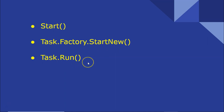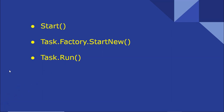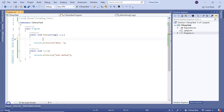Task, Task.Factory.StartNew(), and Task.Run() all use threads from the thread pool. That was how you can start a task in different ways in C#. Now we would like to know what is the difference between these three ways of starting a new task and when to use which one.